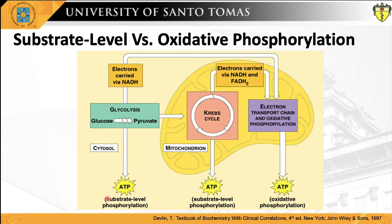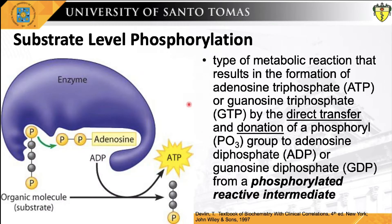Phosphorylation for ATP synthesis is of two types: substrate-level phosphorylation and oxidative or respiration-linked phosphorylation. Substrate-level phosphorylation is defined as the metabolic reaction that results in the formation of ATP or GTP by conversion of a higher-energy substrate — whether a phosphate group is attached or not — into a lower-energy product, using some of the released chemical energy.